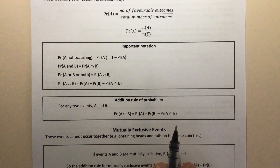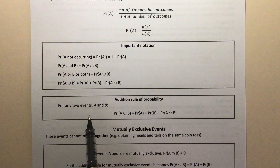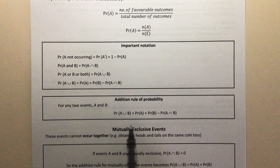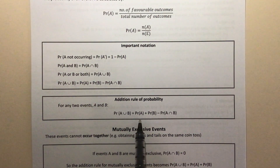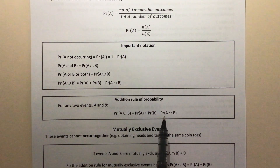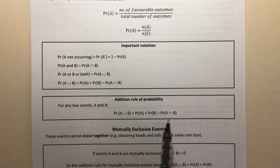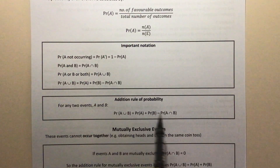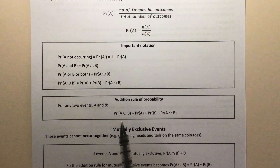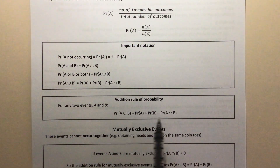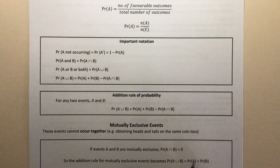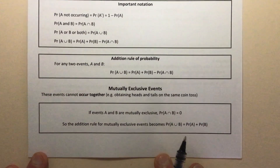The addition rule of probability says that for any two events A and B, the probability of A or B occurring is equal to the probability of A plus the probability of B minus the probability of both. That's the addition rule of probability. It's nice to see that from a Venn diagram, but just in the interest of saving a bit of time, I'm going to keep pushing through.